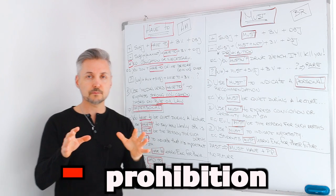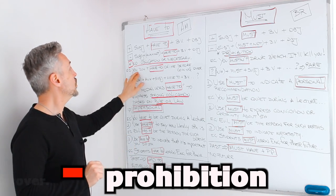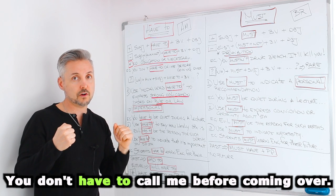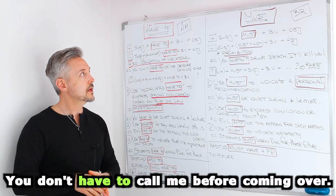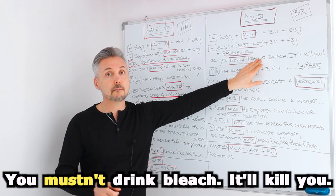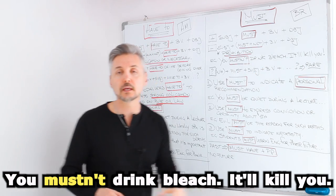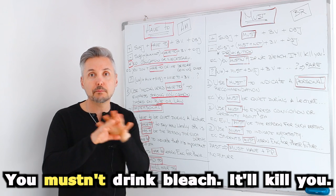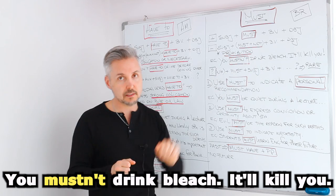I will give you two examples. The first one with have to: you don't have to call me before coming over — it's not necessary. With must instead: you mustn't drink bleach — it'll kill you. So, you cannot, you're not allowed. You mustn't.